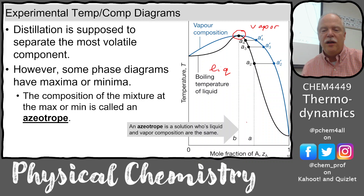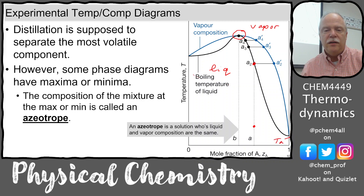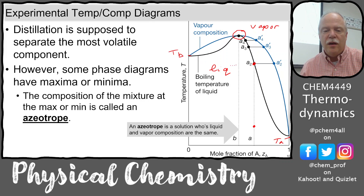So if we start at composition A and come up here — raise the temperature — at this point A starts to boil. Pure A has a lower boiling point. So this is T_A and this is T_B — those are your boiling points of A and B. The vapor is rich in the more volatile component, A.